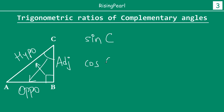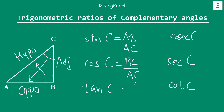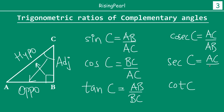So let's write the trigonometric ratios for angle C: sin C, cos C, tan C, cosec C, sec C and cot C. Sin C will be opposite side AB divided by hypotenuse AC. Cos C will be adjacent side BC divided by hypotenuse AC. Tan C will be opposite side AB divided by adjacent side BC. Cosec C will be AC by AB. Sec C will be AC by BC. And cot C will be BC by AB.